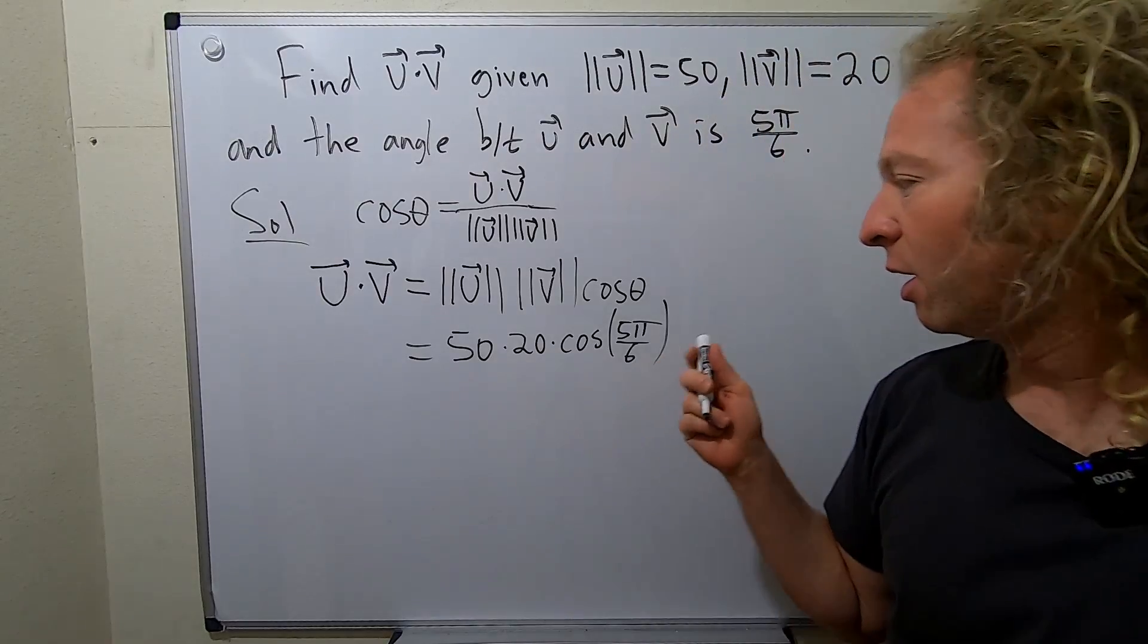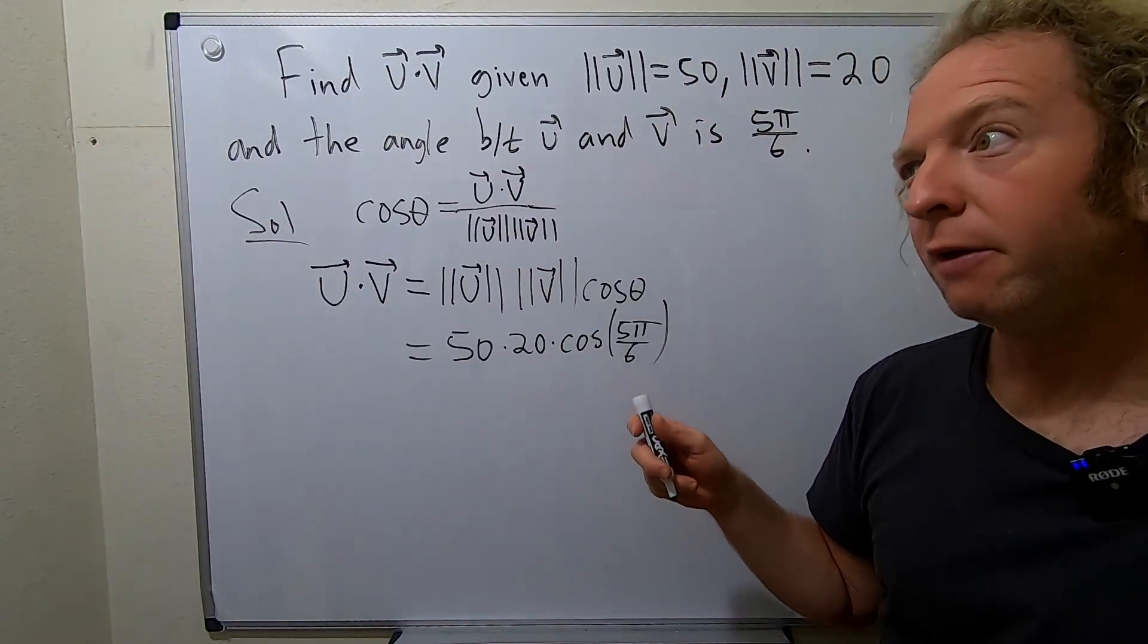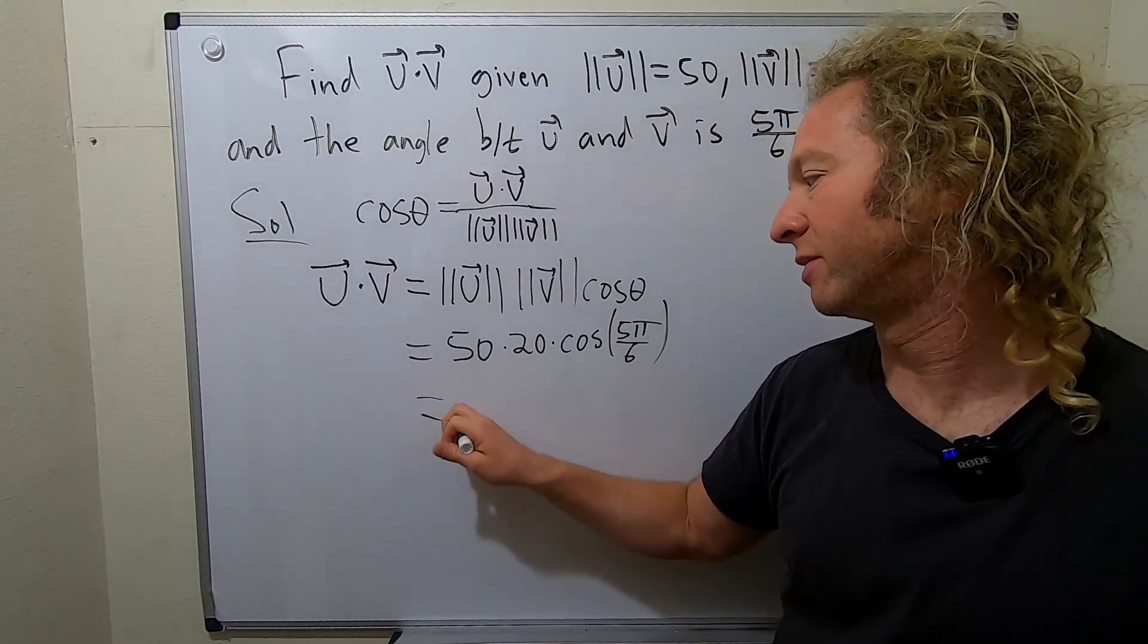So 50 times 20, well, 50 times 10 is 500. So 50 times 20 should be 1,000, because it's double that, so 1,000.